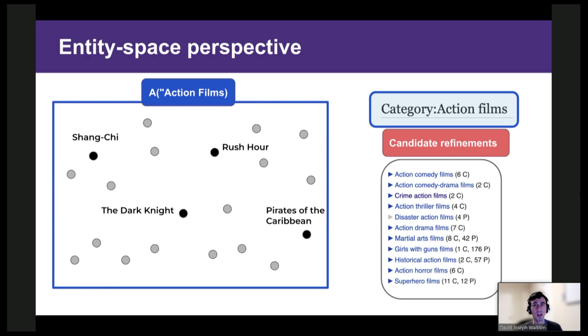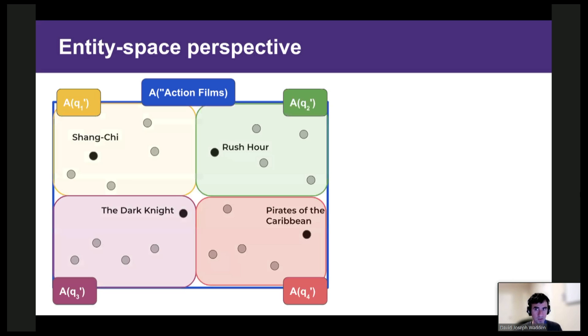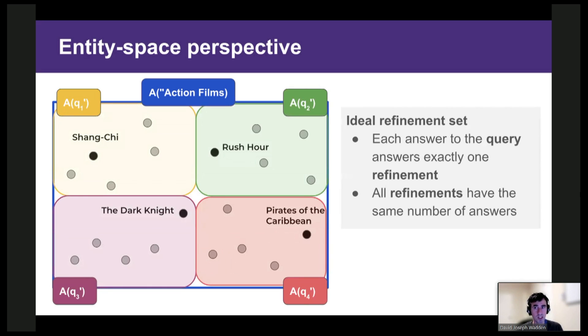So to illustrate the thought process, we're going to take what I'll call an entity space view. The points here represent entities, movies. The blue box containing the points indicates the space of all action films. And all of the points inside this green box correspond to superhero films. So now we can ask, what would an ideal collection of refinements look like in entity space? One answer that we think is reasonable would look something like this. The refinements evenly partition the space of action movies, such that each answer to the query answers exactly one refinement. And all refinements have the same number of answers. We think this is a good goal to aim for since refinement sets that meet these requirements will be comprehensive and non-redundant.